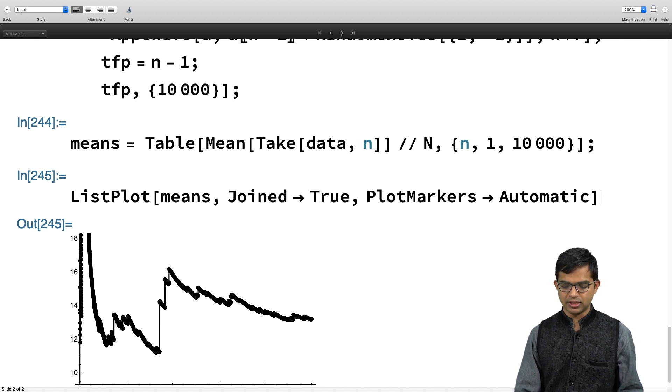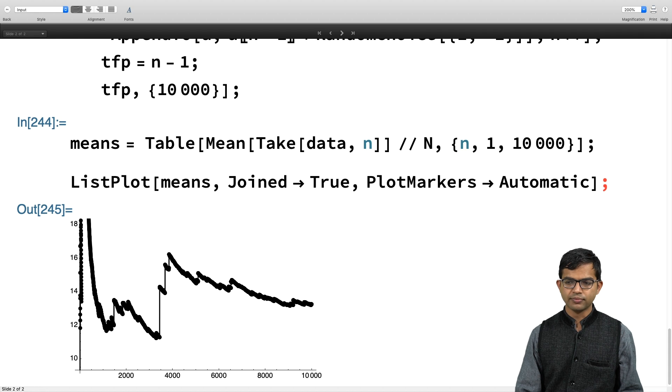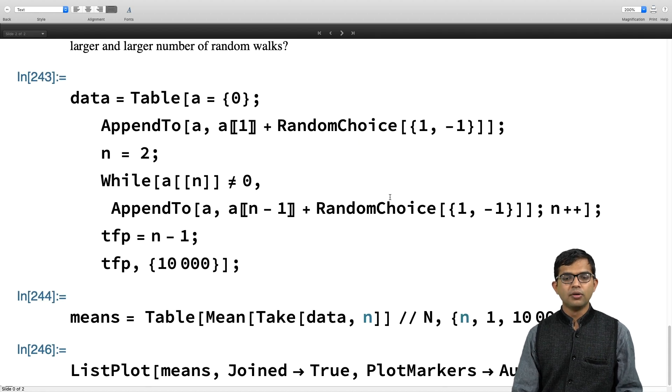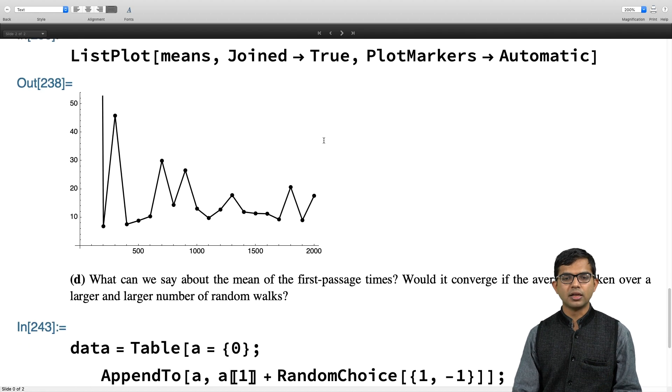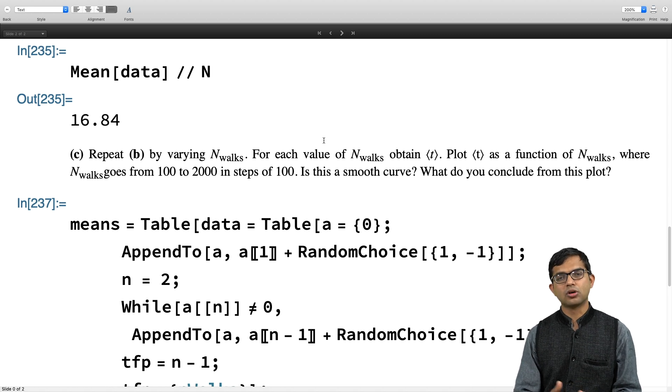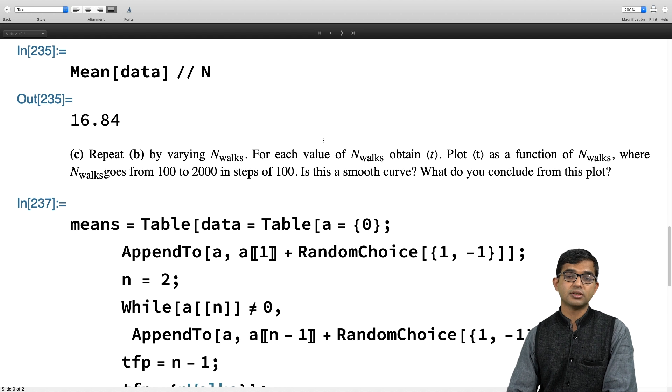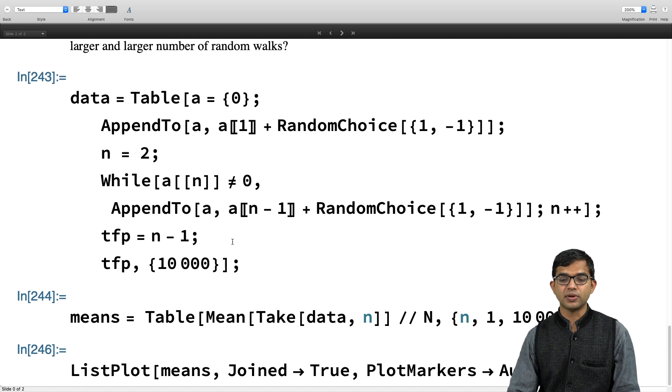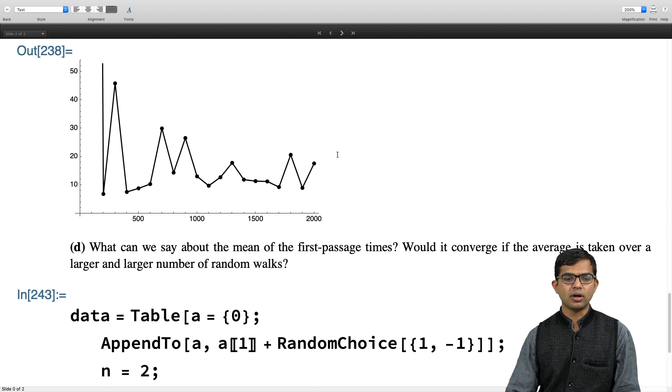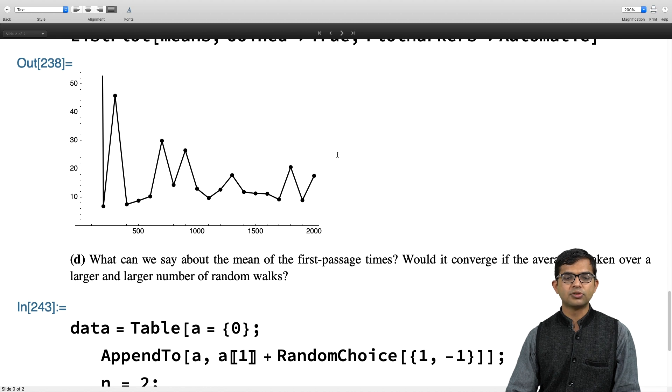The final overall take home message from this discussion is that with probability 1, there is going to be first passage to the origin or to any point that you choose. But the average time taken for first passage is actually infinity. And that is why this quantity is not a convergent quantity, this mean. This is something that you should play with and try to solve all these bits for yourself, A, B, C, D. Thank you.